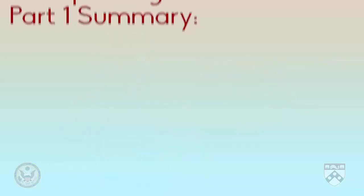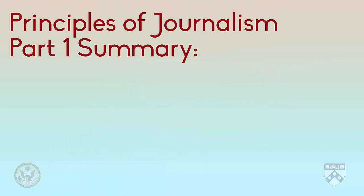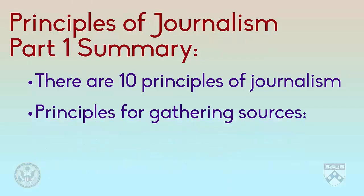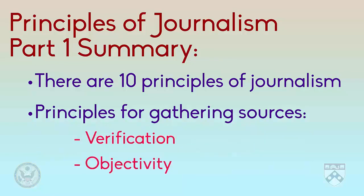So, in this video, we learned what a principle is, and that there are ten principles of journalism. We looked at the principles of journalism that have to do with gathering sources: verification and objectivity. In the next videos, we'll learn about the other remaining principles of journalism.